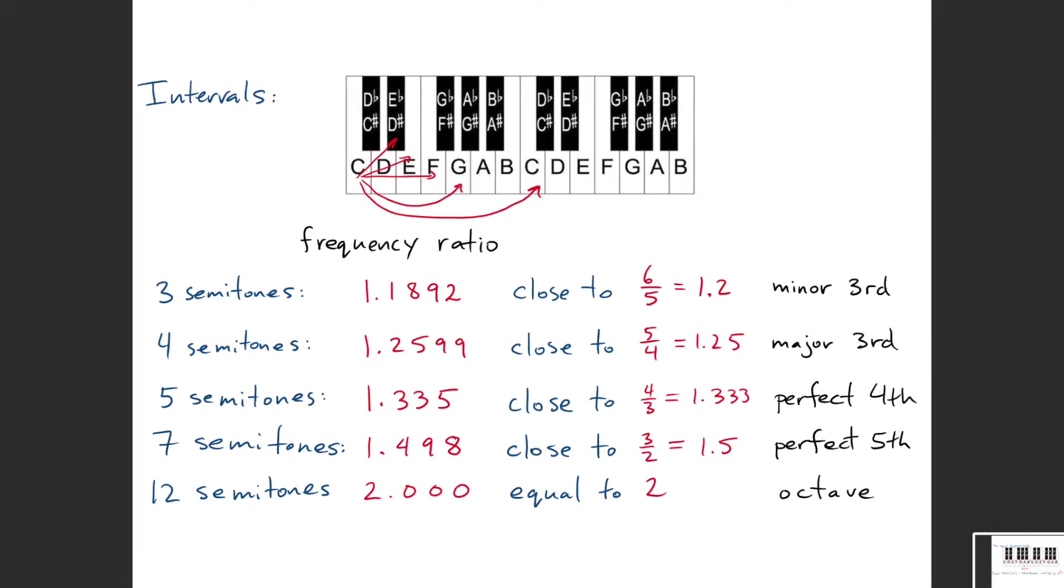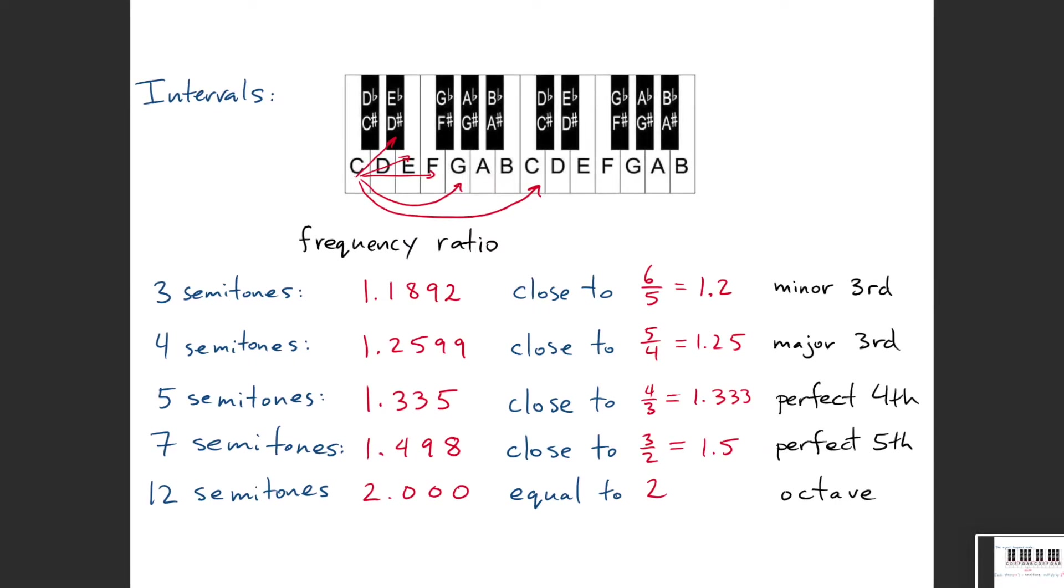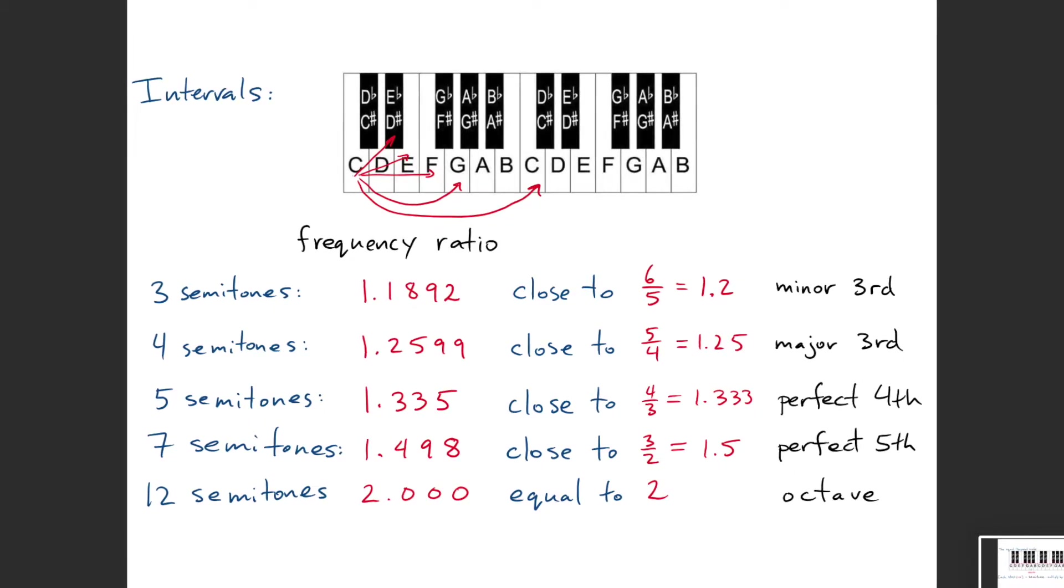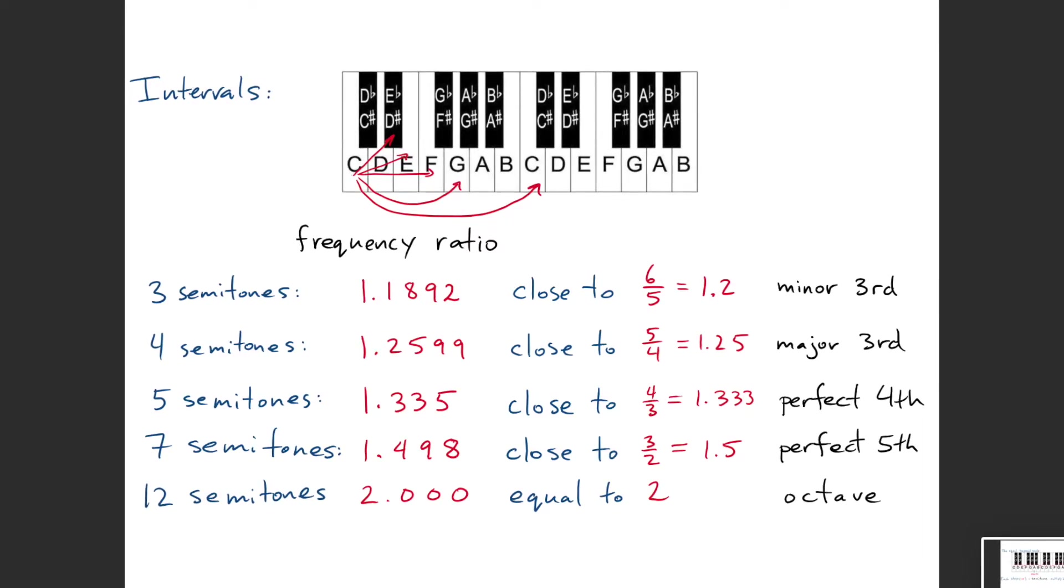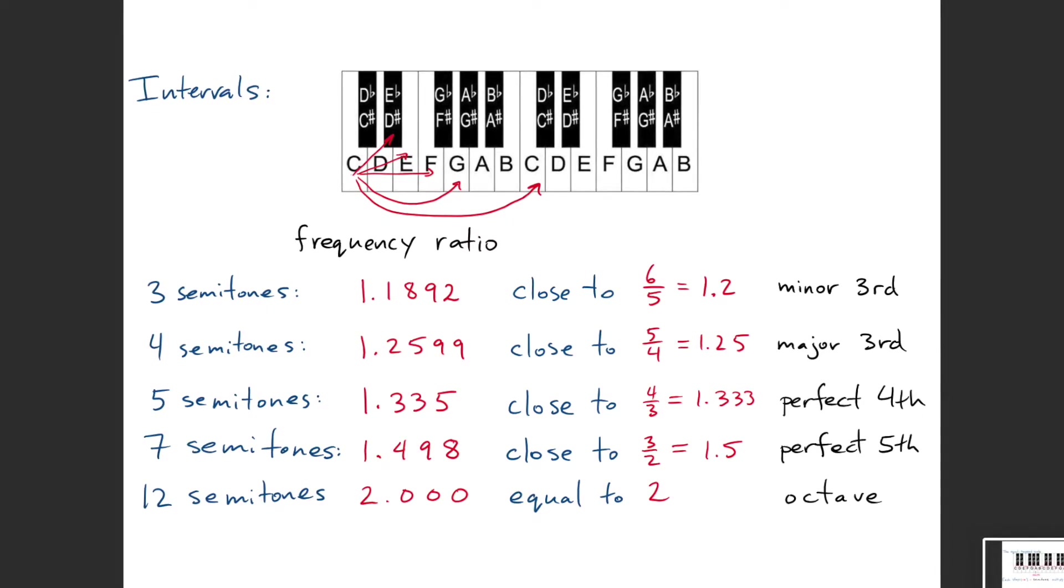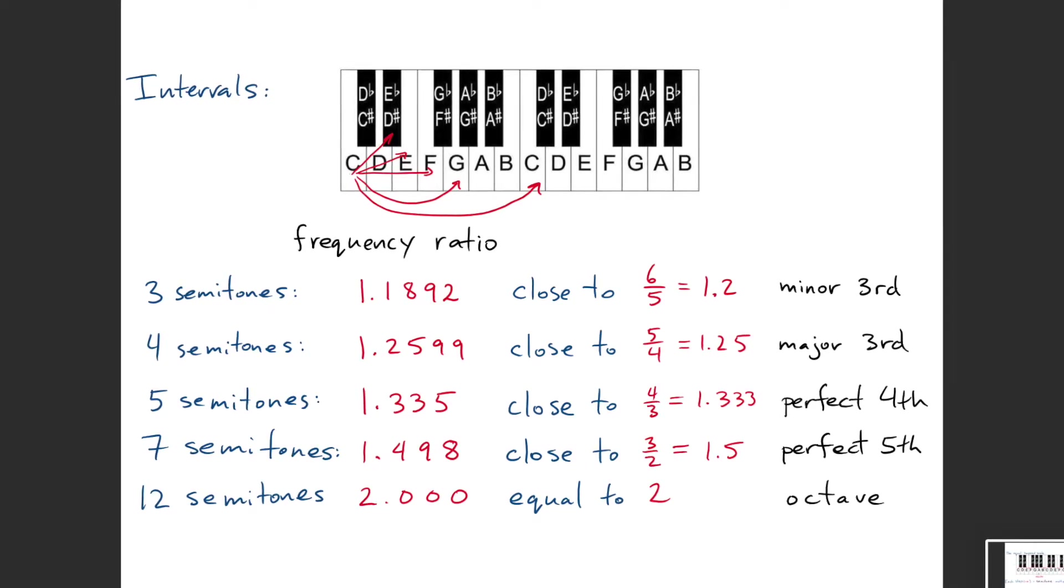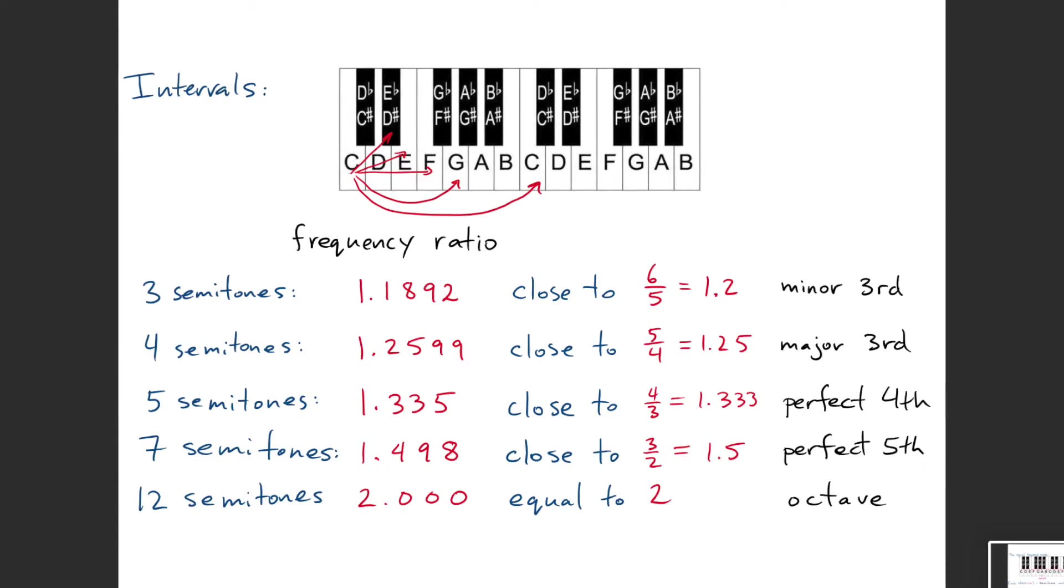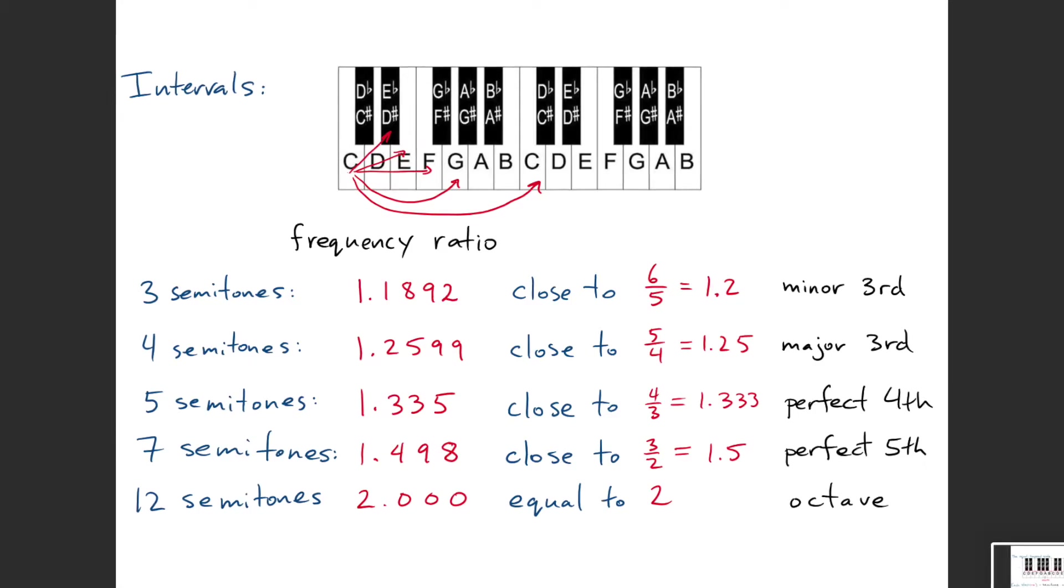Dividing up the octave into those 12 equal parts, we end up getting all of the most important intervals in music. The reason why we do this equal division rather than sticking with these perfect ratios of 5/4, 4/3, 3/2, is that we could start now on any of the notes and we'll get exactly the same interval.